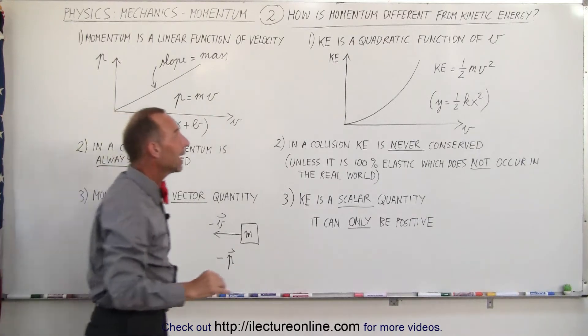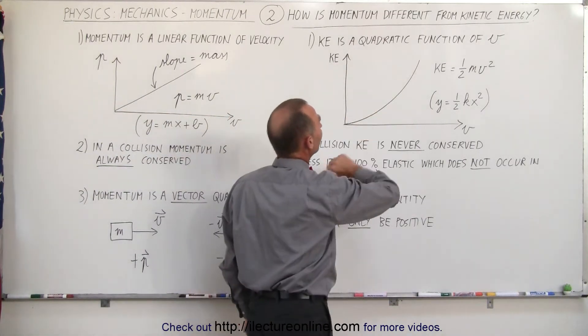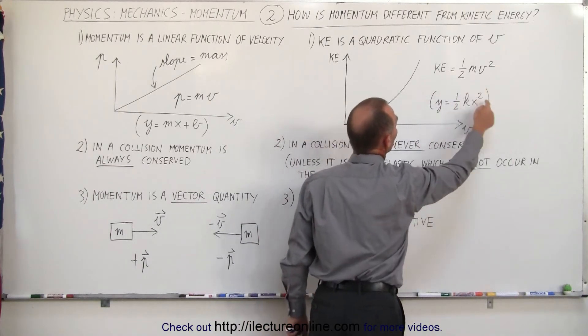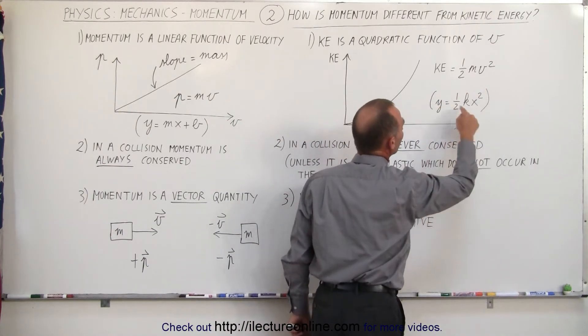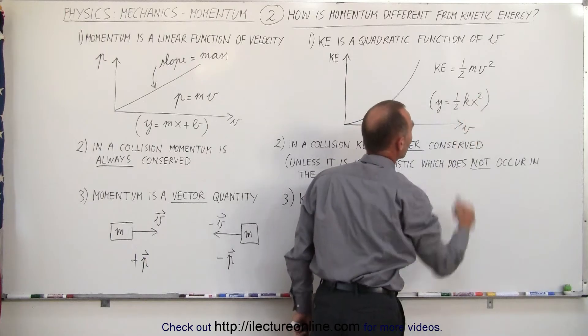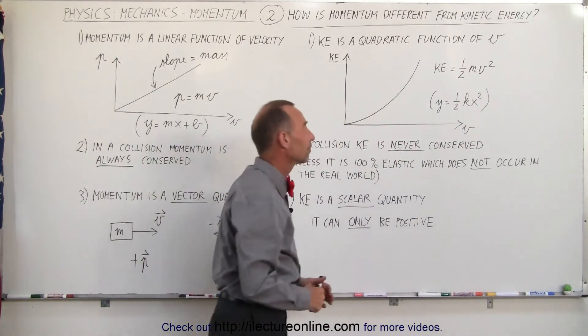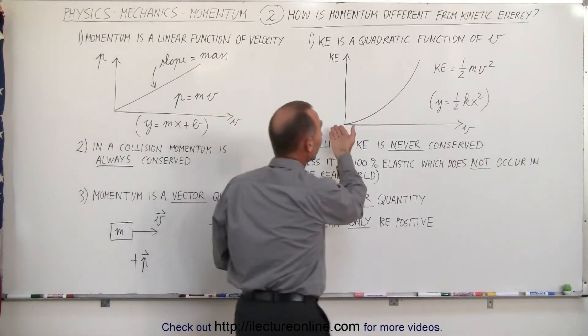Kinetic energy, on the other hand, is a quadratic function of v. The kinetic energy is one-half mv squared, which looks a whole lot like y equals one-half kx squared, k being some constant, in this case the constant is again the mass of the object.